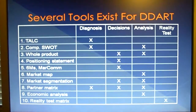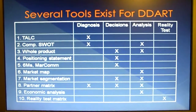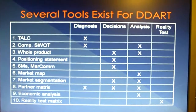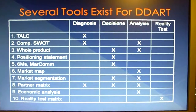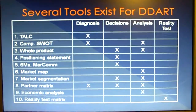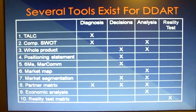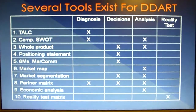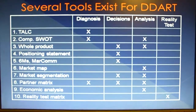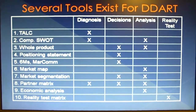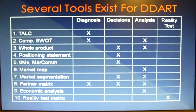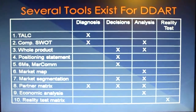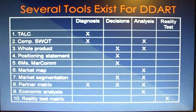We will be discussing several tools that exist for D-DART, though we will actually only be discussing the analysis tools. The various tools that exist for D-DART include the TELP, the SWOT, the whole product, the positioning statement, the 6Ms, the market map, market segmentation, a partner matrix, an economic analysis, and a reality test matrix.